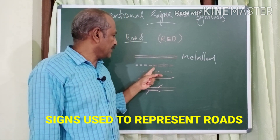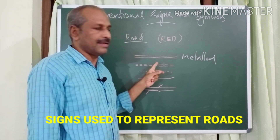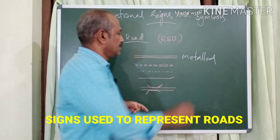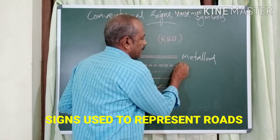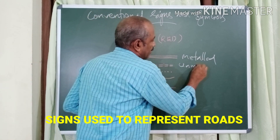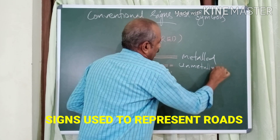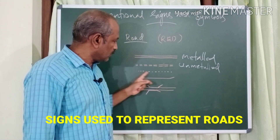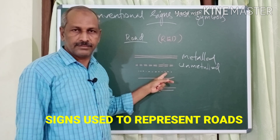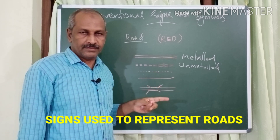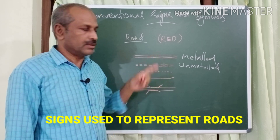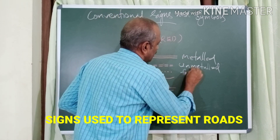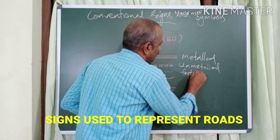The second one shows two parallel broken lines, and they represent an unmetalled road. Next, a linear dot pattern represents a footpath.